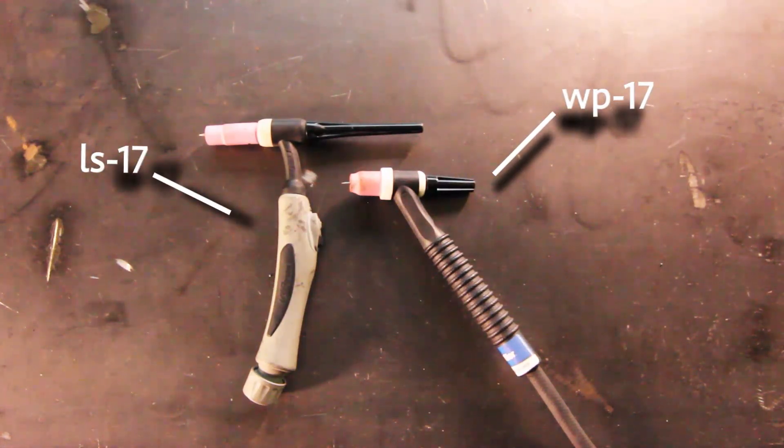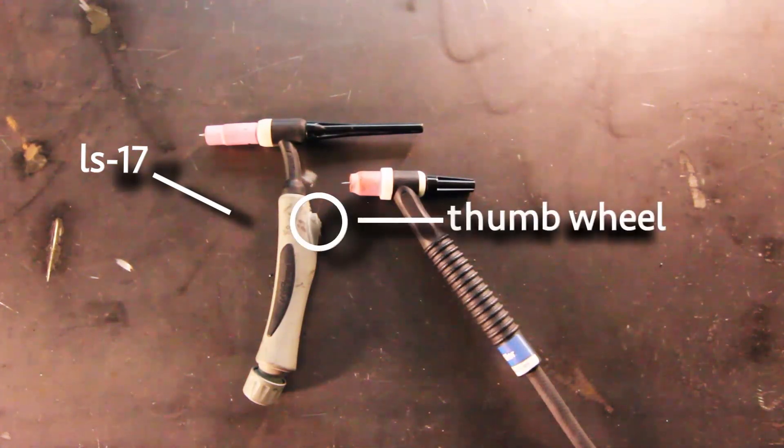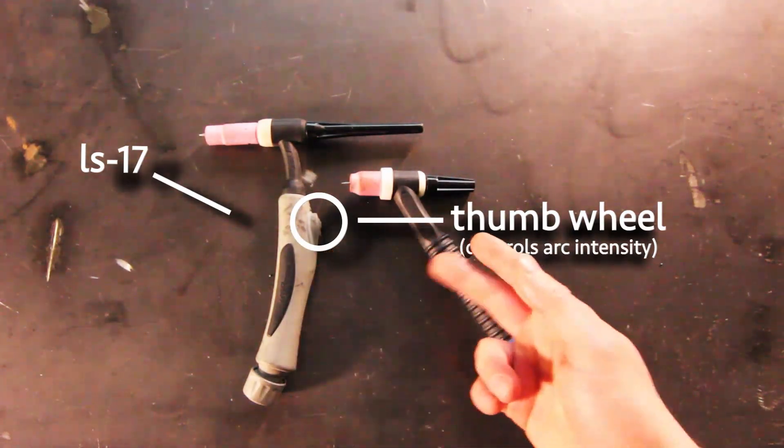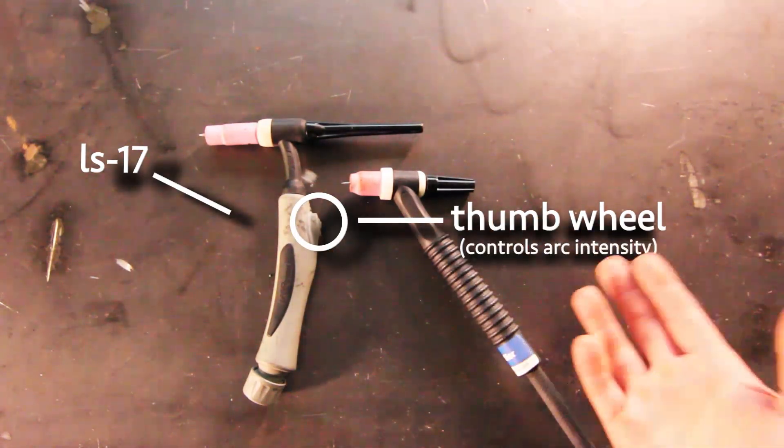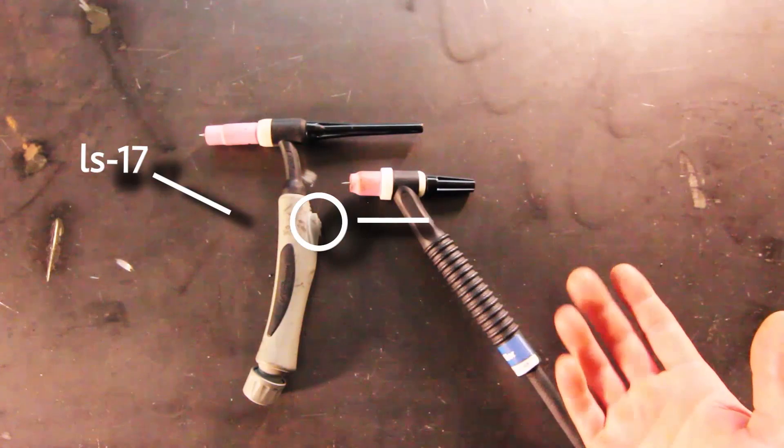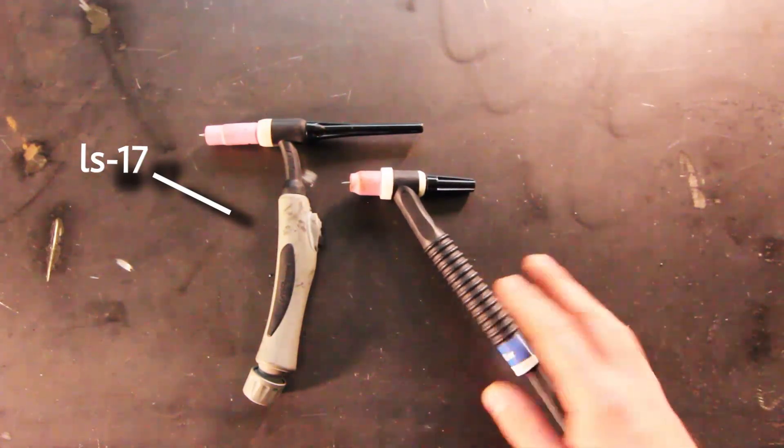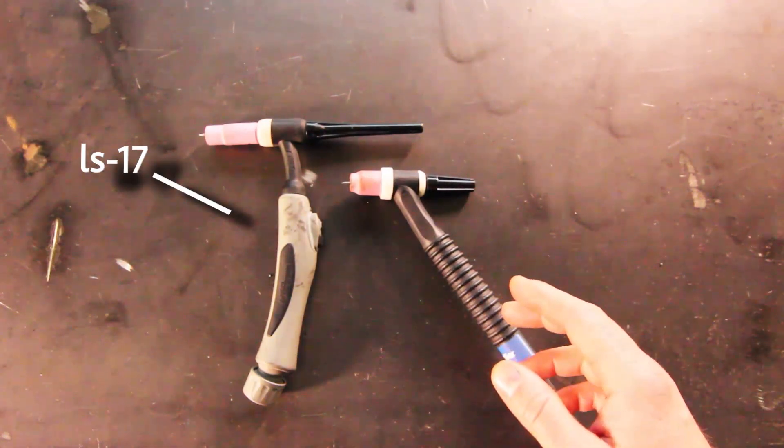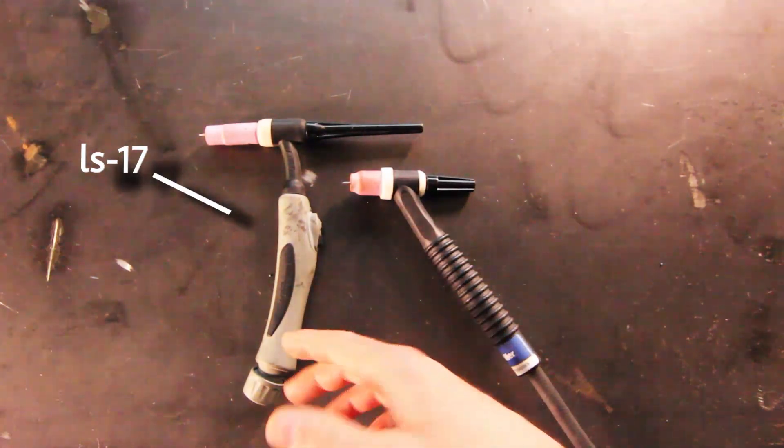The LS-17 has thumb controllers and this wheel that allow you to control the intensity of the arc as you move through the weld, just like a pedal would. This particular torch doesn't require a pedal hooked up to the machine in order to use it.